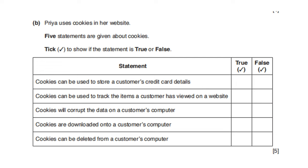Priya uses cookies on her website. Five statements — tick true or false. Cookies can be used to store customers' credit card details — true. Cookies can be used to check the items a customer has viewed on a website — true. Cookies will corrupt the data on a customer's computer — false. Cookies are downloaded onto the customer's computer — true. Cookies can be deleted from the customer's computer — true.